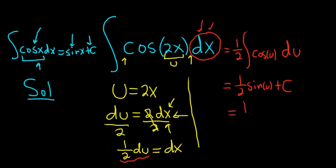u is equal to 2x. So this is 1 half sine of 2x plus our arbitrary constant of integration, capital C. And that is the final answer.